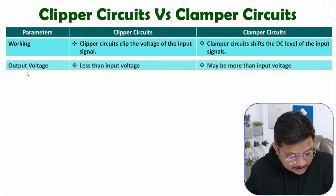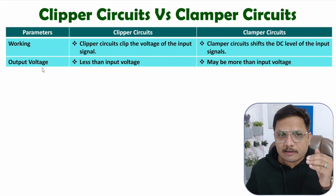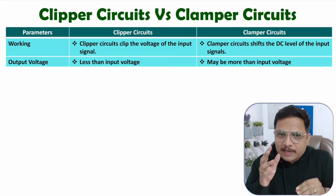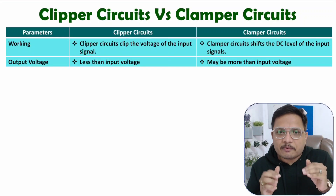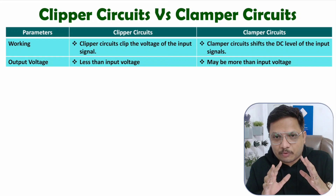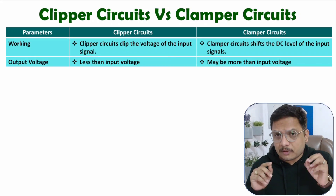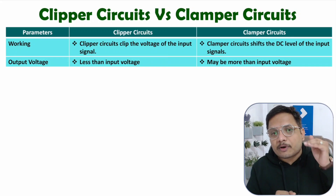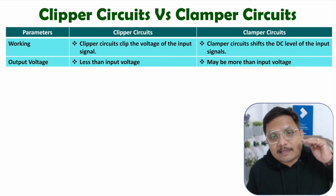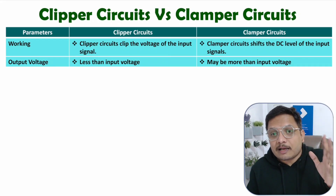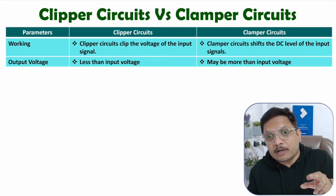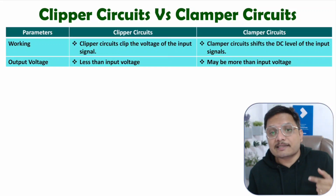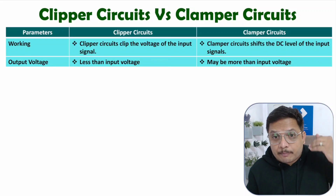The second parameter is output voltage. With a clipper circuit, we don't increase the voltage more than the input — at the output side, we are just clipping the voltage, not increasing it. With a clamper circuit, the output may be more than the input. For example, if your input voltage varies from minus Vm to plus Vm, then after a positive clamper with Vm DC shifting, the voltage will vary from 0 to 2Vm — so we are increasing the voltage up to 2Vm.